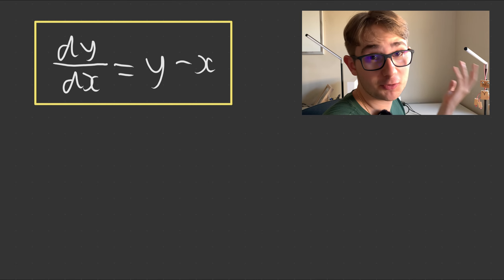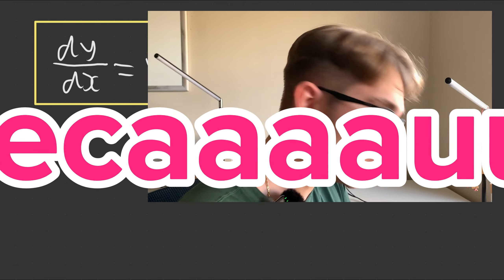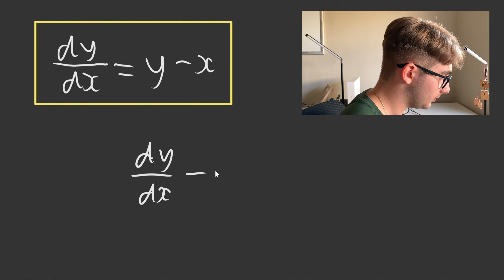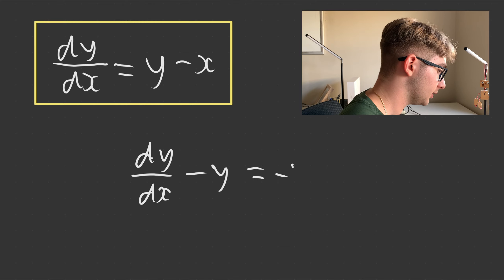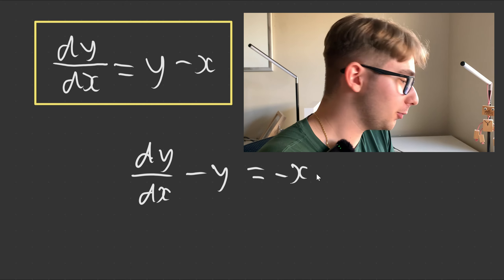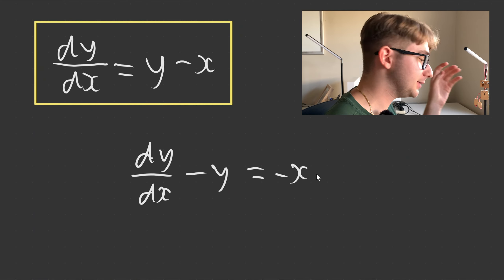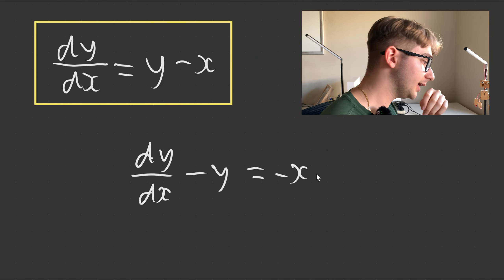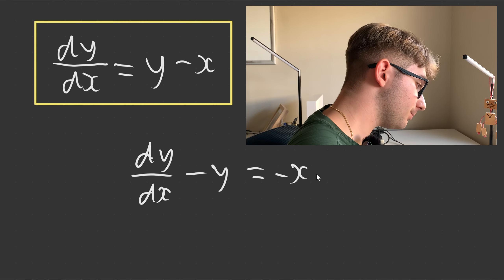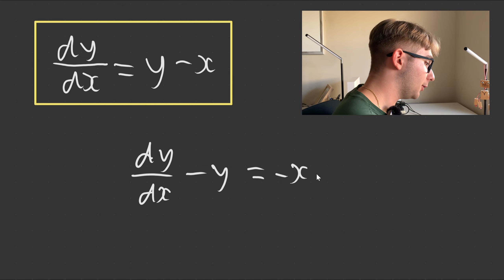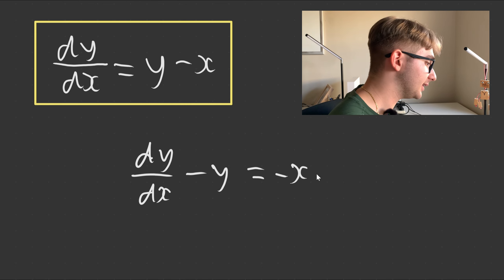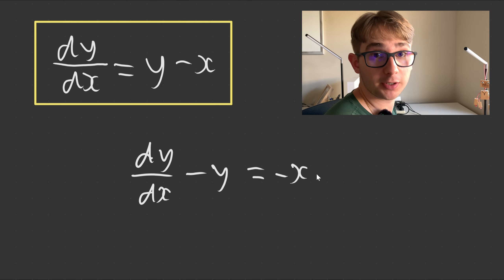What we need to do is subtract y from both sides. If we rewrite the equation, we get dy/dx minus y equals negative x. This is in the form of a linear differential equation — basically the result of the product rule, a differentiation technique, applied to a function. But it's incomplete, so we need to multiply both sides by some function to make this actually look like the result of a product rule.